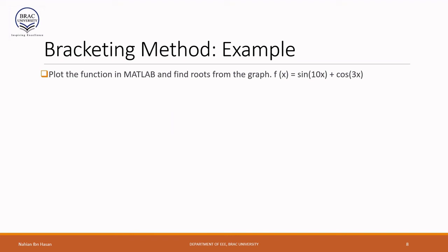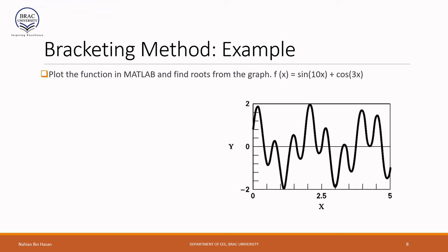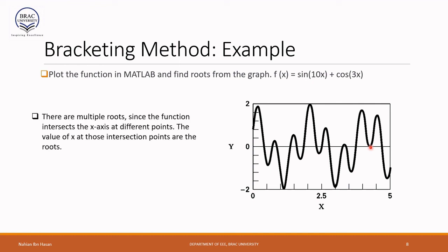Let's look at a transcendental function example: sin(10x) + cos(3x) — an arbitrary function. Its graph shows multiple points where the function intersects the x-axis and some points where it merely touches the x-axis, giving many roots including similar ones. Transcendental functions like trigonometric functions are periodic, meaning there can be many roots within a range. We should be careful about whether those roots are separate distinct roots or similar roots where the function just touches the x-axis.